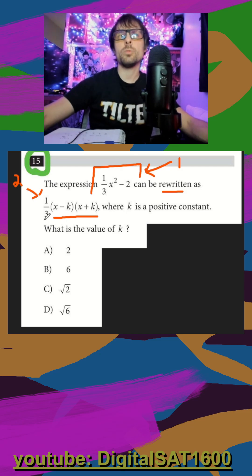So again, I see the one third on the outside. So if I divide both of these by one third, I'll have an x squared. And when you divide by a fraction, you multiply by the reciprocal. So it's going to be minus six. And then my one third is on the outside.